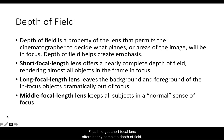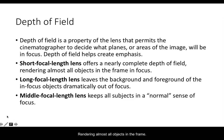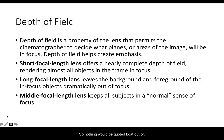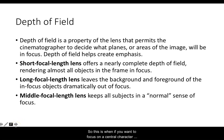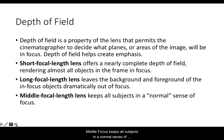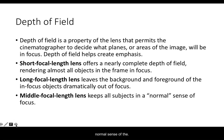First, a short focal lens offers nearly complete depth of field, rendering almost all objects in the frame visible — this would be used to show everything in the most detail possible with nothing out of focus. Long focal lenses leave the background and foreground dramatically out of focus — used when you want to focus on a central character but have the background be blurry. Middle focus keeps all subjects in a normal sense of focus, with some balance of things in and out of focus consistent with what we would expect from our normal sense of vision.